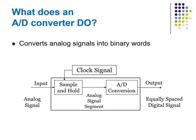What does an analog to digital converter do? It converts analog signals into binary words. The block diagram depicts analog to digital conversion: the input is an analog signal and the output is an equally spaced digital signal. The sample and hold circuit gives a segment of the analog signal that needs to be converted into a digital signal.